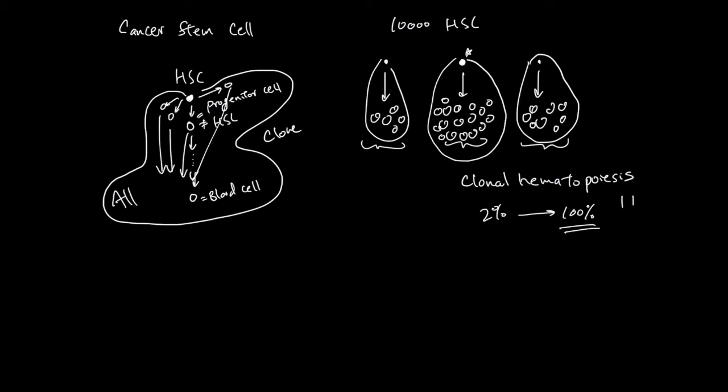The likelihood of clonal hematopoiesis increases with age. Here's age on the x-axis and probability of clonal hematopoiesis on the y-axis. People less than 40 years old have about 1% chance of having clonal hematopoiesis, but people over 70 years old have anywhere between 10 to 20% chance.